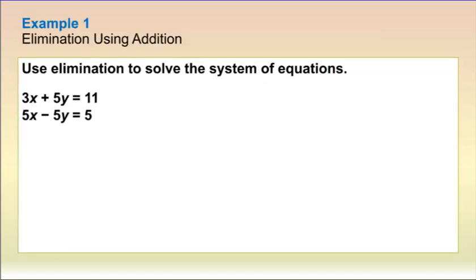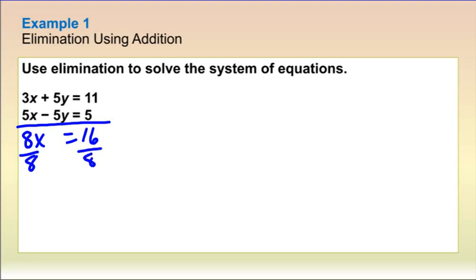Our first example: use elimination on the system. Check our x's and y's — they're all lined up. You'll notice that the y's have the same number but opposite signs, so that is a clue that we are going to eliminate our y's. We add straight down and we have 8x equaling 16. To get x by itself, divide by 8 on both sides, and we're left with x equaling 2.